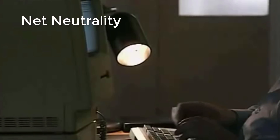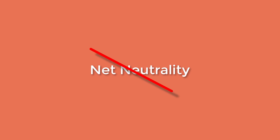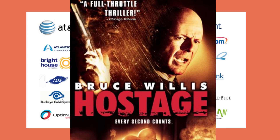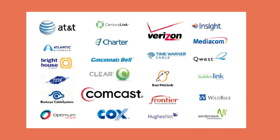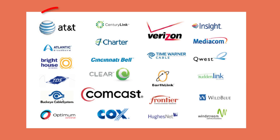ISPs can't influence what I do online. Now without net neutrality, there isn't anything stopping internet service providers from blocking or slowing down certain websites, holding the information we want hostage until we pay them more money. This is an example of what the internet would look like if this happened. Now you may say to yourself, "Well, I can just choose a different service provider, can't I?" But how many choices of ISPs are actually in your area?